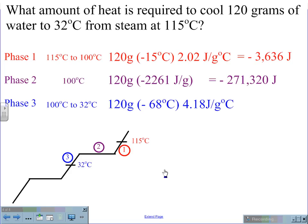The last phase is 120 grams with a change of negative 68 degrees Celsius at 4.18 joules per grams degrees Celsius for a joule amount of negative 34,108.8. This gives us a total value of lost heat of negative 309,064 joules.